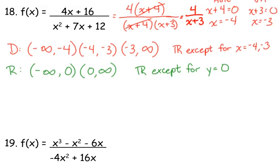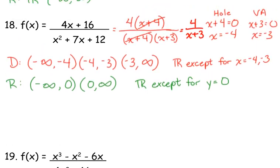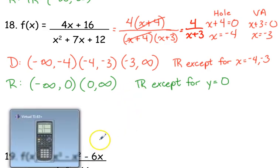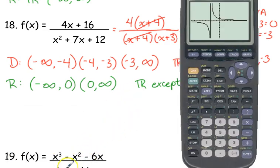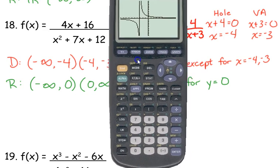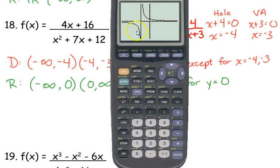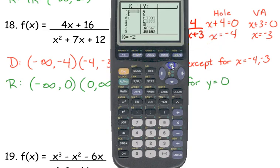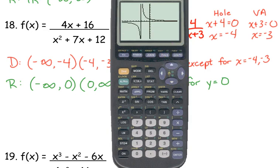When you graph it, why would there not be two pieces? Because we didn't have two vertical asymptotes. We had a hole at negative 4, and even though it looks like there's a piece right there, if you look at the table there's no y-value at negative 4 — it's just a hole, not a vertical asymptote. We only have one vertical asymptote at negative 3.